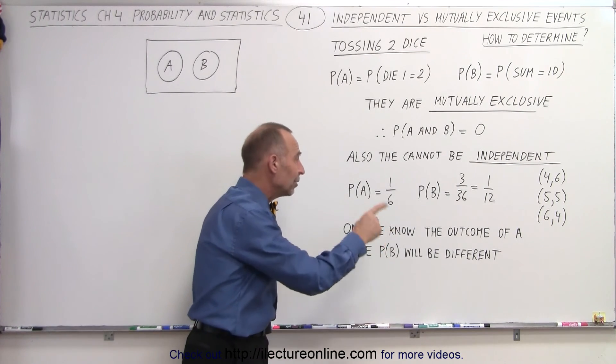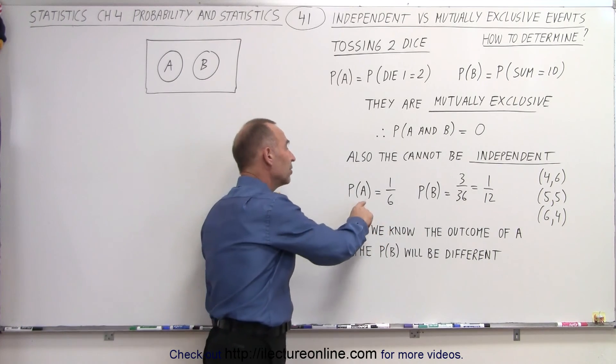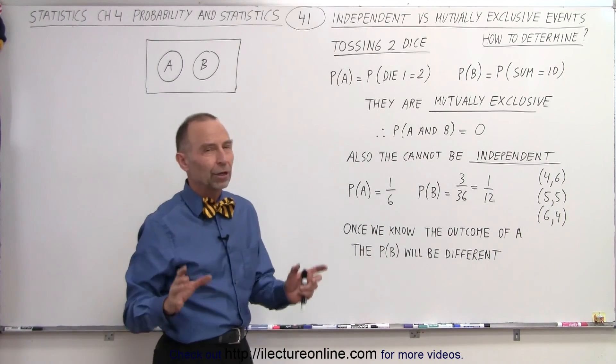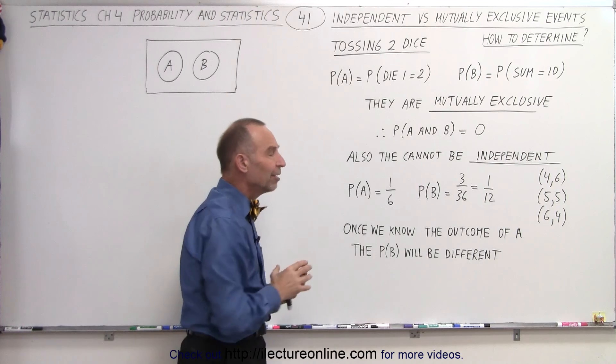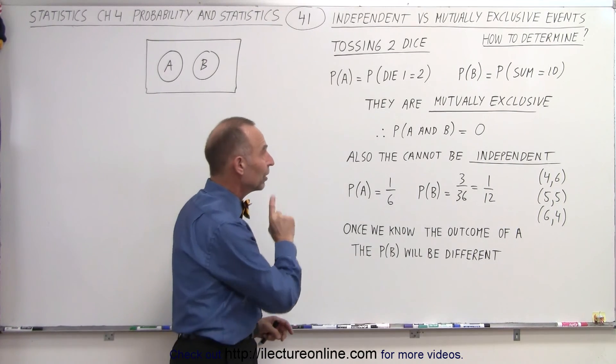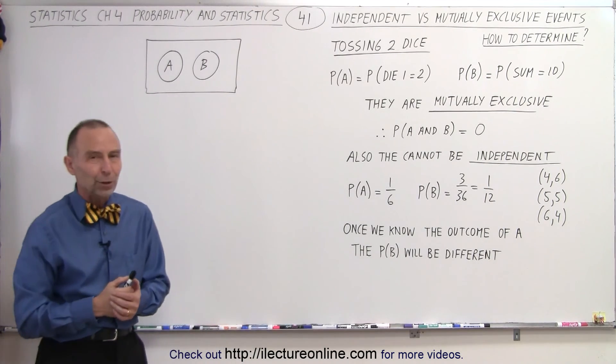So you can see that the outcome of B does depend entirely on the outcome of A, and therefore they're mutually dependent events and they're mutually exclusive. And that is how we know.